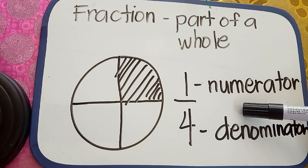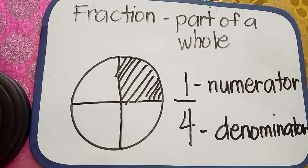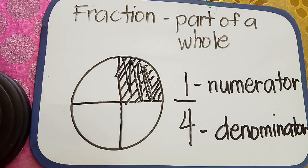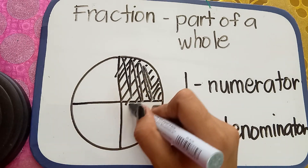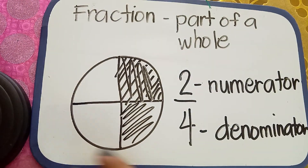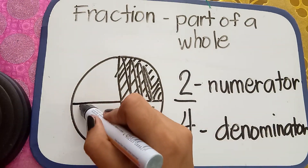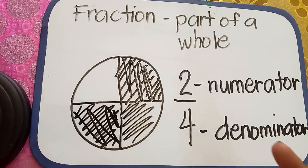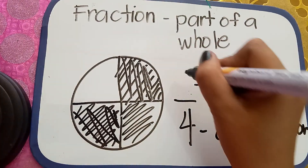The numerator tells how many parts were taken. For example, in this whole pizza, how many parts were taken? How many parts did I eat? One. So that is the numerator. What if I eat two parts? So how many parts were taken? One, two. So we will change it to two. What if I am hungry and then I eat another part? So how many parts were eaten? One, two, three. So you will change it to three.